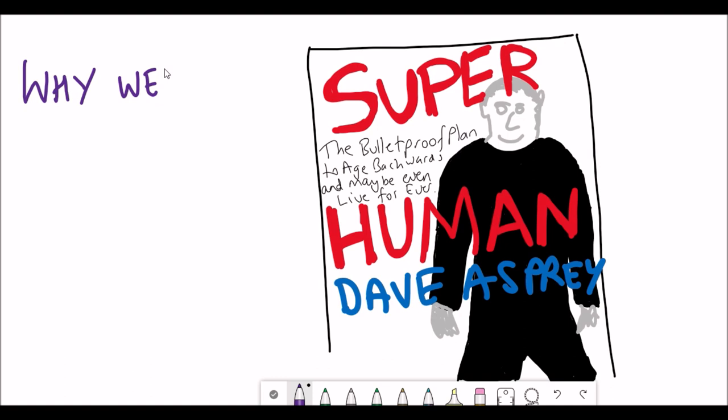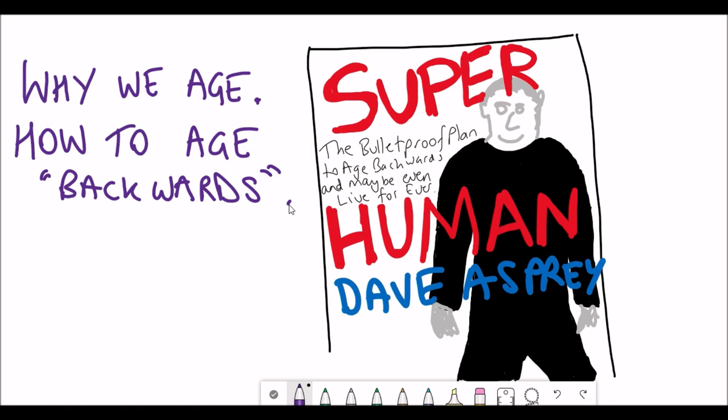So firstly, what is this book actually about? Well, the book covers why we age but also how to age backwards through practical advice and so-called biohacking to manipulate and prevent the aging process.